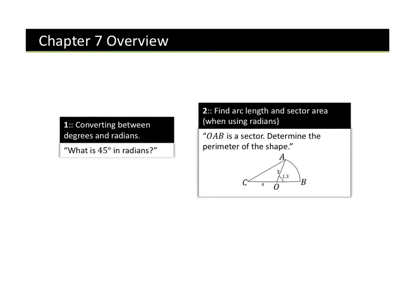Chapter 7. We are really going to look at converting between degrees and radians, which is completely new for you. Then we're going to find arc length and sector area. You've done that in GCSE, but instead of using degrees, we're going to use radians. It's a little bit new, a little bit the same — to be honest, it's more the same than it is new.